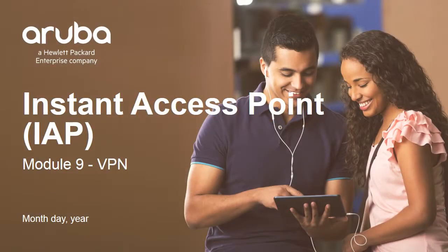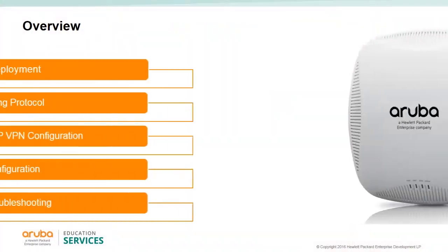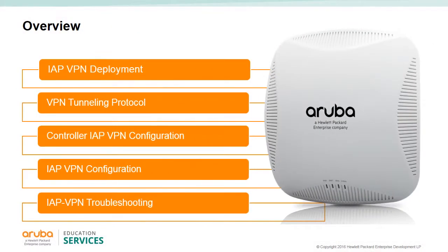In this module on Instant AP VPN, we'll look at the various IAP VPN deployments we can use, the various VPN tunneling protocols, the controller VPN configuration for IAPs, the IAP VPN configuration, and then some troubleshooting steps for when VPN is not working.